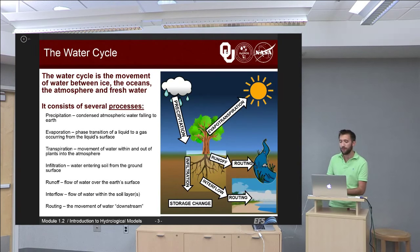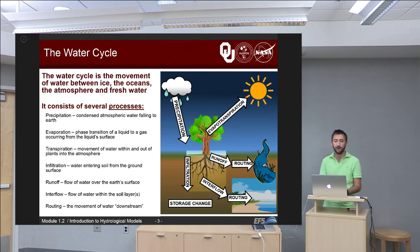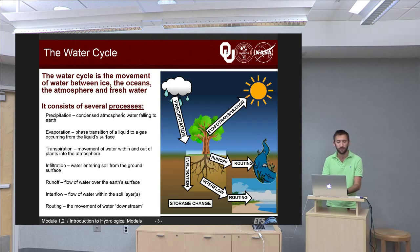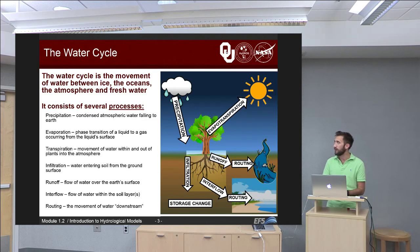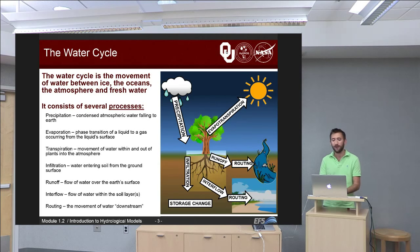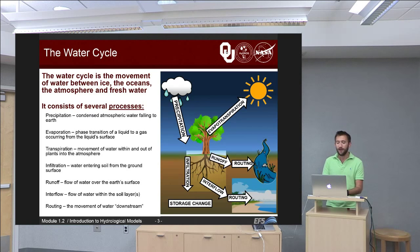The water cycle — the most simple definition is that it's the movement of water between the ice, the oceans, the atmosphere, and the various freshwater bodies across Earth's surface and underground as well. It consists of several processes, all of which are outlined at the right of this slide with various arrows. Precipitation is condensed atmospheric water falling to Earth. Evaporation and transpiration — we put those two together and call them evapotranspiration.